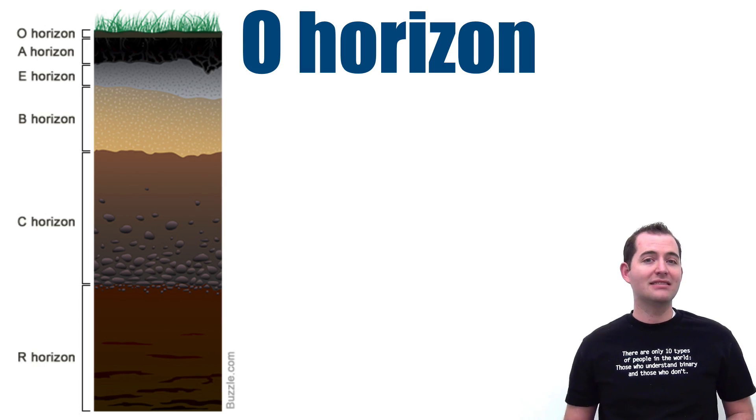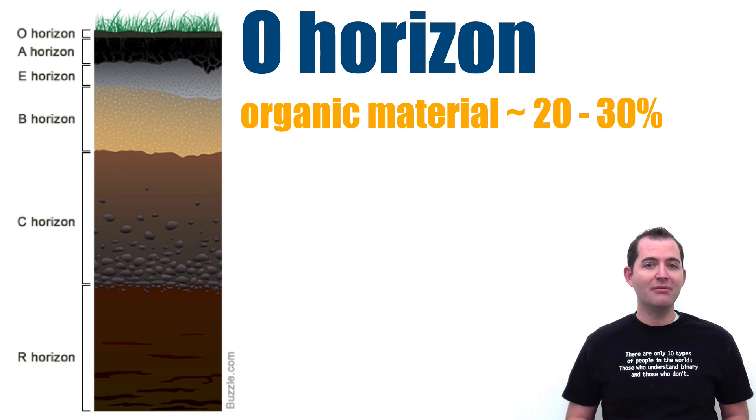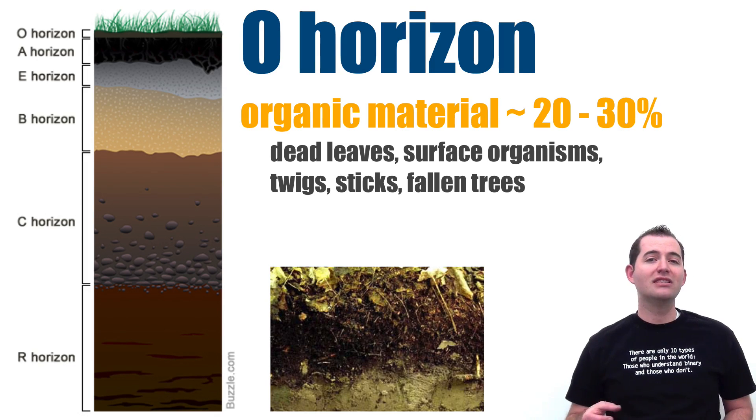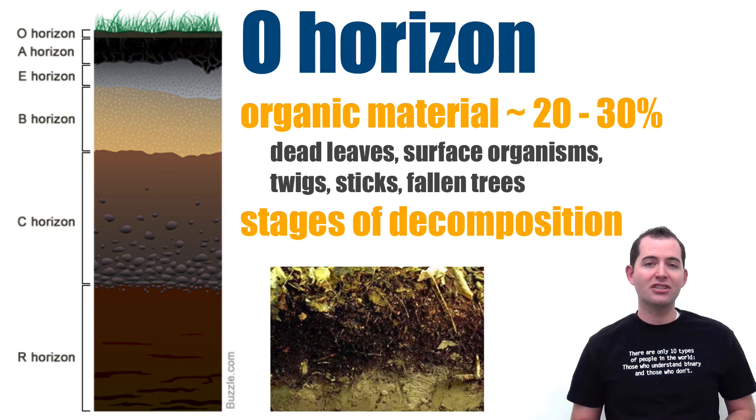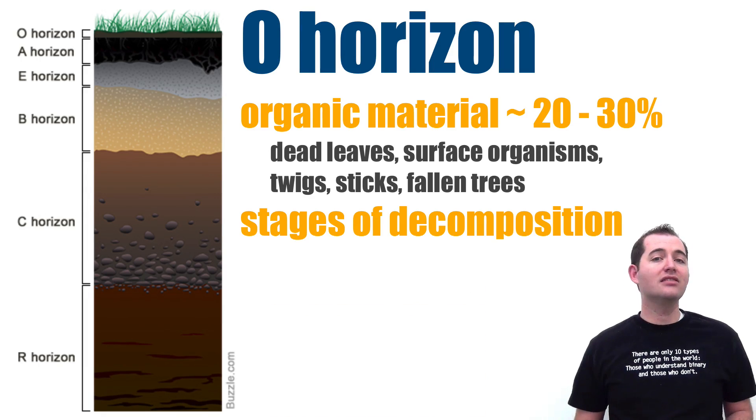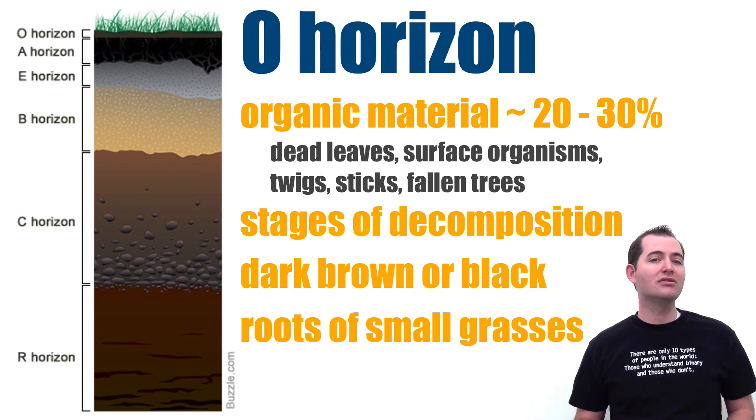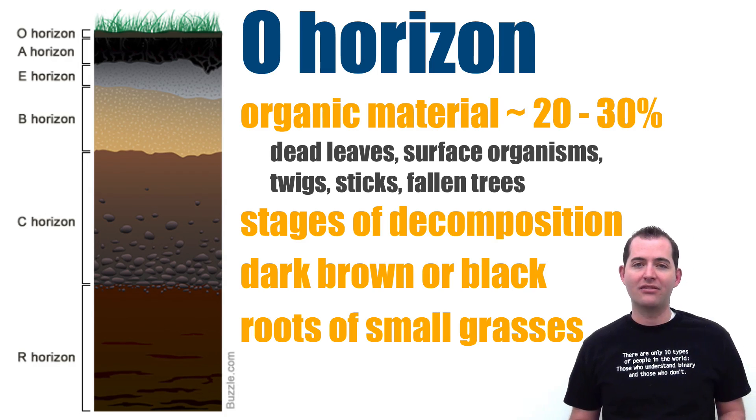If horizon O exists in a soil profile, it is at the very top. Horizon O is a layer of organic material typically made up of dead leaves, surface organisms, twigs, sticks, or fallen trees. This horizon can show different stages of decomposition among the material that's found there. This horizon is often dark brown or black and is where the roots of small grasses are typically found.